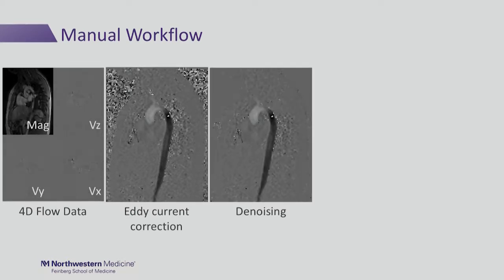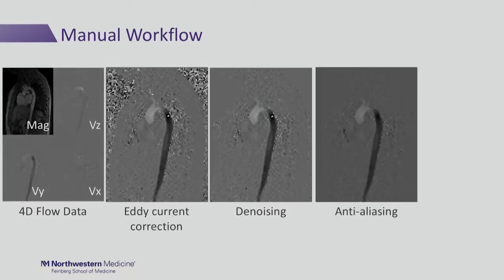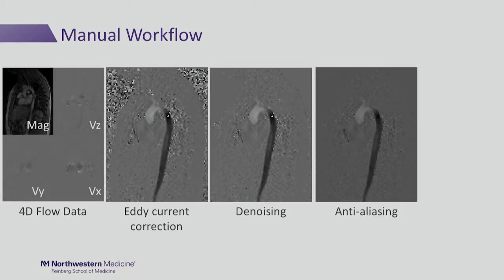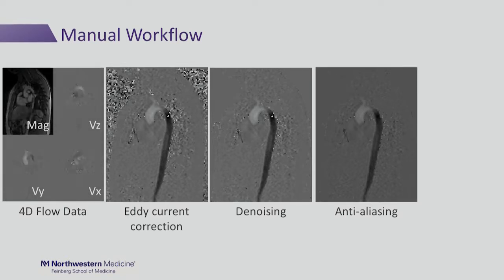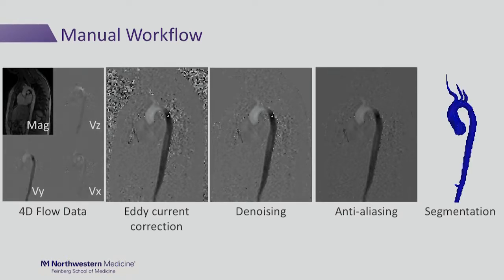Next, we apply a denoising filter to get rid of noise in the background. And then third, we correct for aliasing. There were some aliased voxels that were corrected. And then finally, we can do a 3D segmentation.